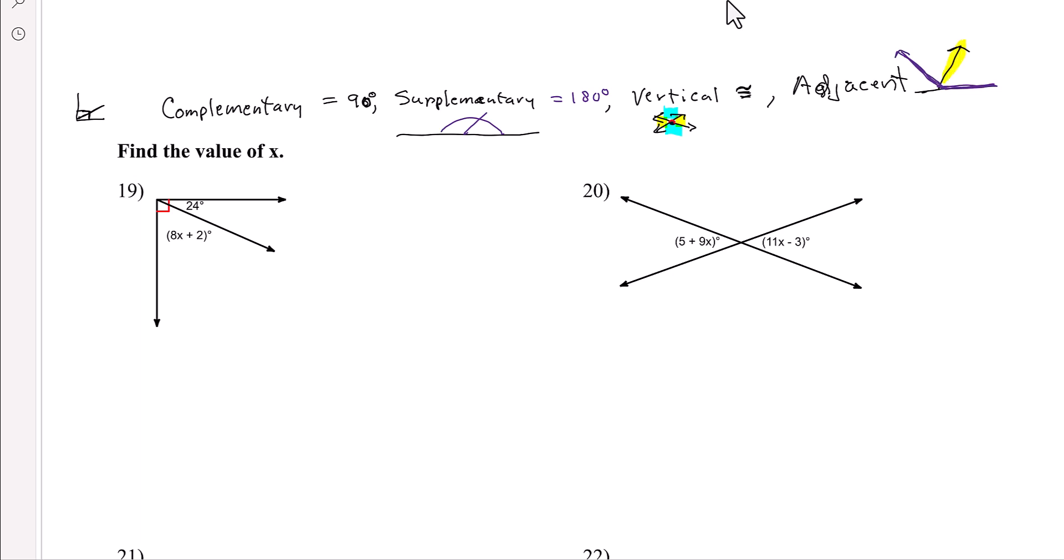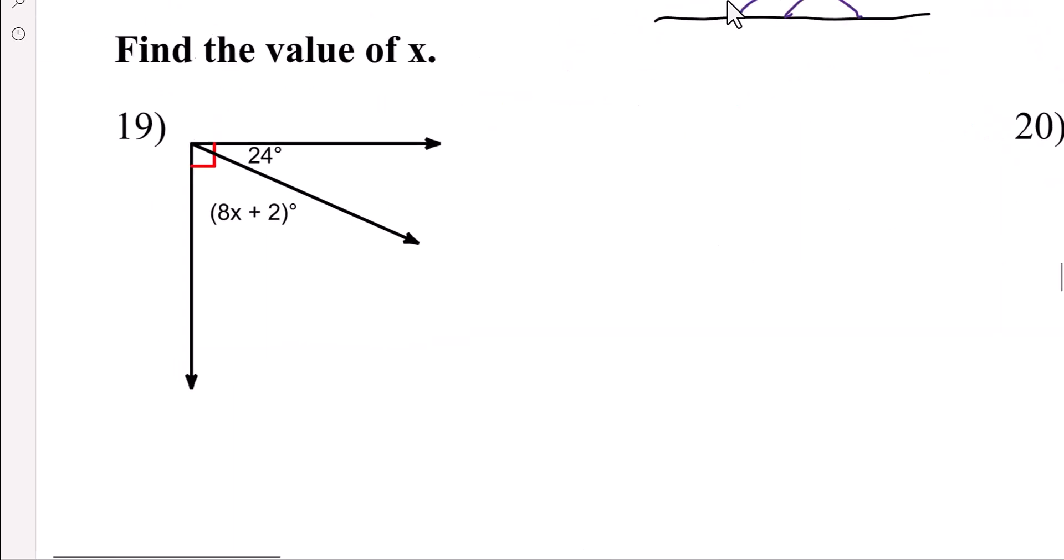Well, those two angles share that ray, so you probably need to know how far you went around the circle up until that angle, and then do 360, subtract the given angle, and that would tell you how much those two angles are worth. Alright, so let's get started.